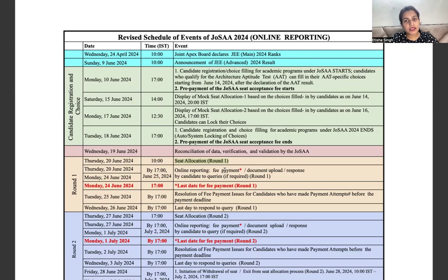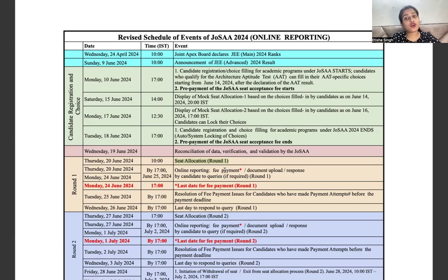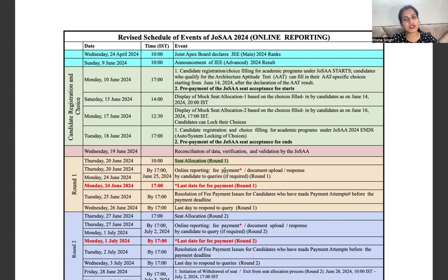The third option is float. Float means that you currently have a seat with a certain campus and department from the first counseling round, but you want to go to a campus higher up in your filled preferences. In the float option, your department may change and sometimes your college may also change. If it doesn't change, you will retain the same campus and the same department.